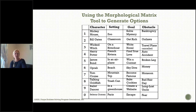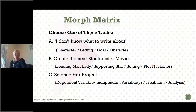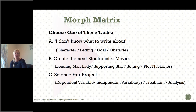This is just one way to use the morphological matrix. Another way: perhaps you are interested in writing a blockbuster movie or a screenplay. The column titles could be a leading man or lady, the supporting star, the setting, and the plot thickener. You can also use the morphological matrix for a science fair project — your dependent variable in the first column, your independent variable in the second column, and your treatment in the third column.